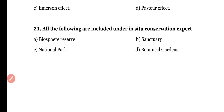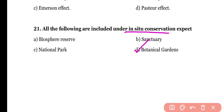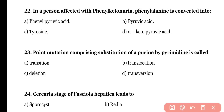Question number twenty-one: all of the following are included under in-situ conservation except (a) biosphere reserve, (b) sanctuary, (c) national park, or (d) botanical garden. The correct answer is option D — botanical garden comes under ex-situ conservation, while national park, biosphere reserve, and wildlife sanctuary fall under in-situ conservation.